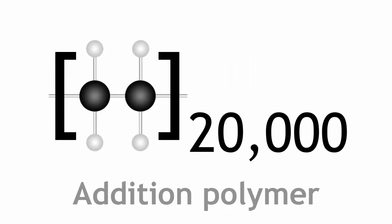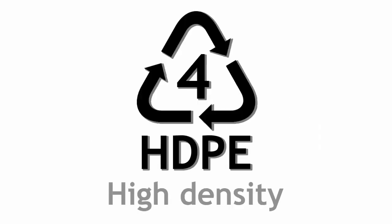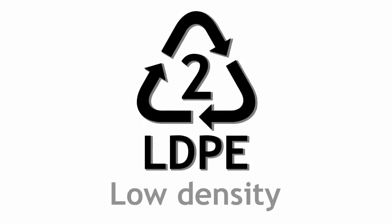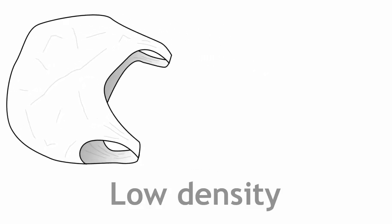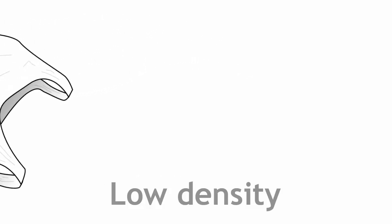There are two different forms of polyethene, low density and high density, differing in how they are manufactured and their properties. Low density polyethene is commonly used for plastic bags and similar thin sheet-like low strength products.